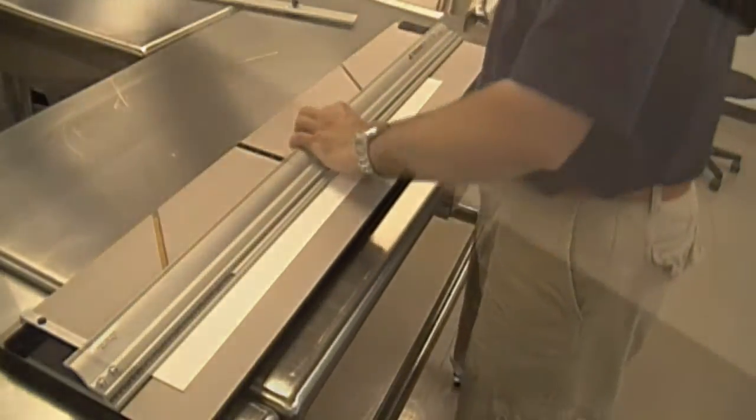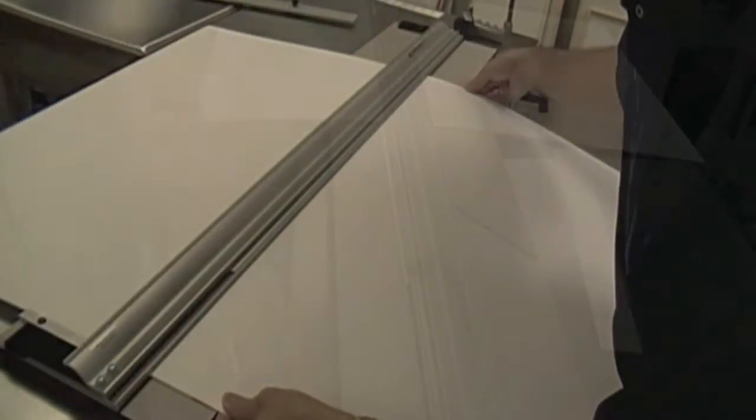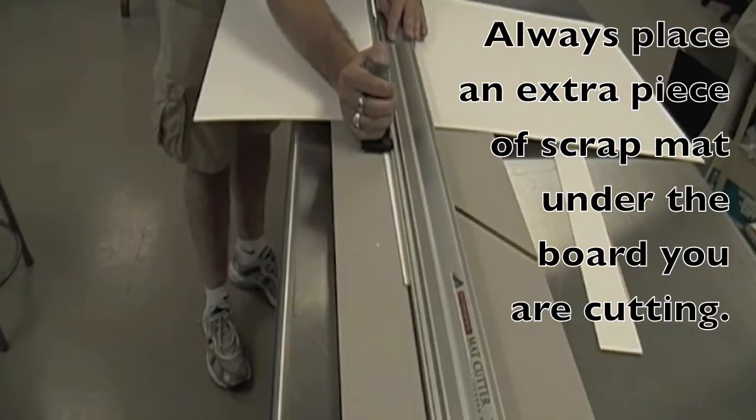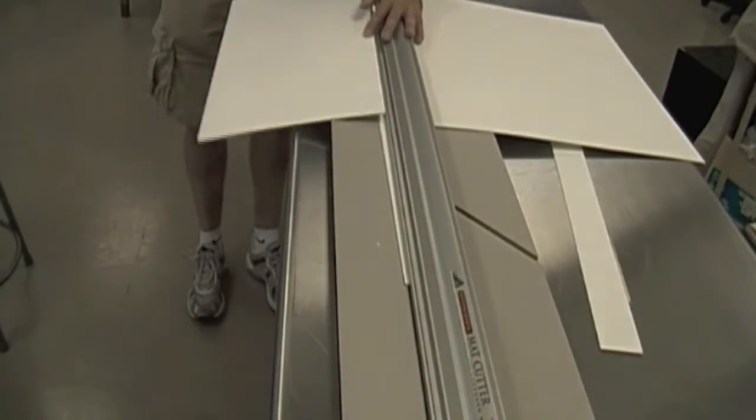Usually I tend to use a foam core as the backing because it's more rigid and won't warp with any kind of moisture over time. And that requires a deeper cut with a blade. And then you can use a shorter blade on there for the regular mat board.